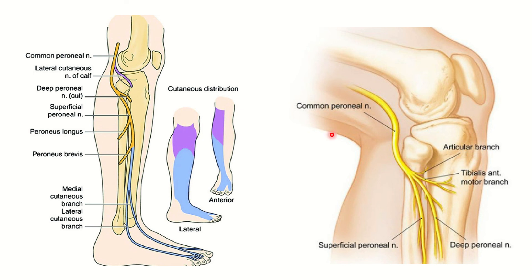Other nerves such as the posterior tibial nerve and other nerves are not closely related to the bone in this area, so there is less chance of injury to those nerves.